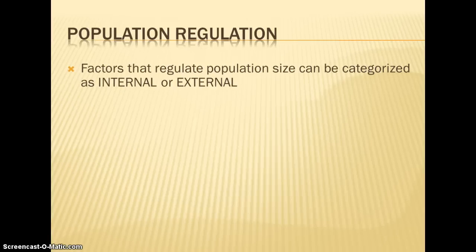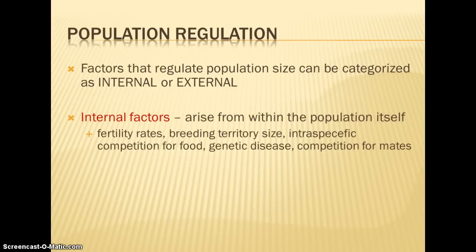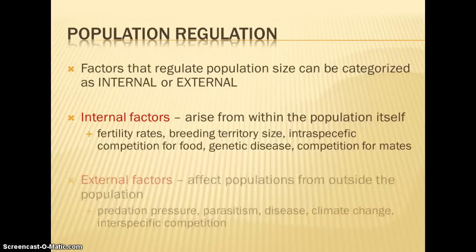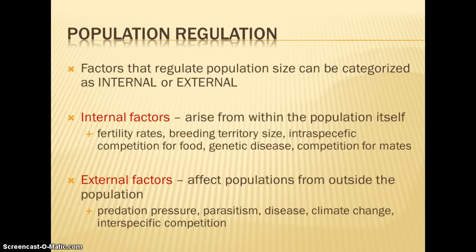These factors can also be categorized as internal or external. Internal factors come from the population itself — the population's fertility rate, territory size needed for breeding, and intraspecific competition, which is competition between members of the same species. External factors have nothing to do with the population's own characteristics; these are outside factors such as predators, parasites, disease, and climate change.